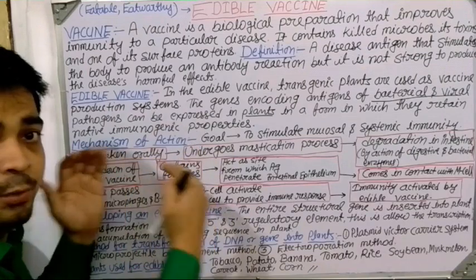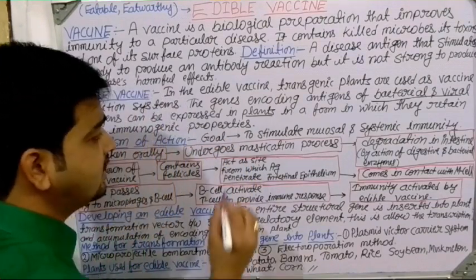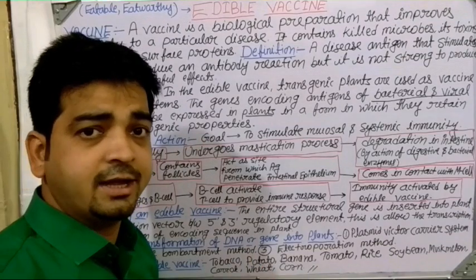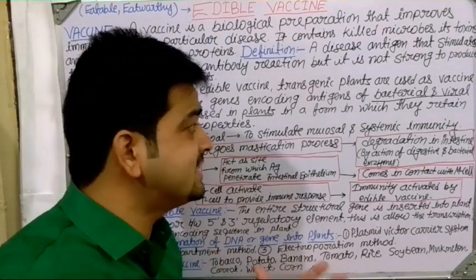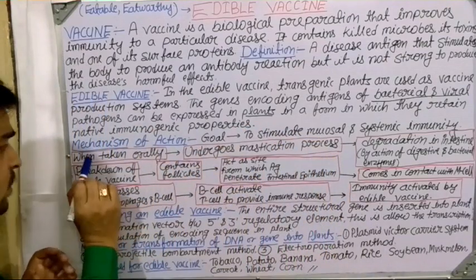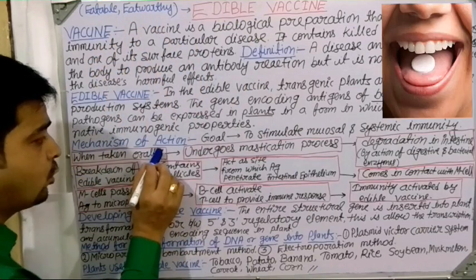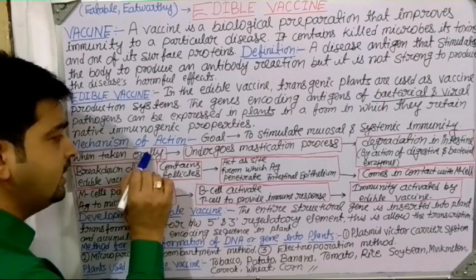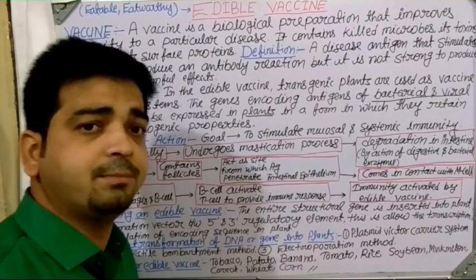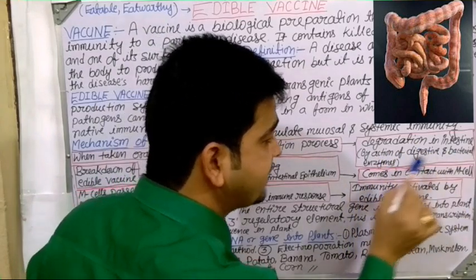The main goal of this kind of vaccination is to stimulate the mucosal and systemic immunity against the pathogen — the same goal as every type of vaccine. When the edible vaccine is taken orally — because the route is oral, not parenteral — it undergoes mastication and size reduction, then degradation in the intestine by the action of digestive and bacterial enzymes.